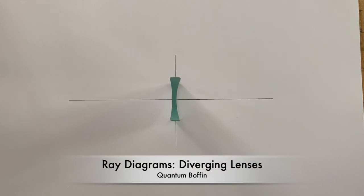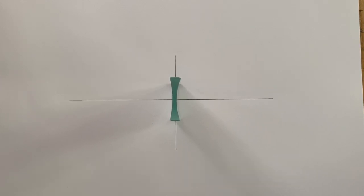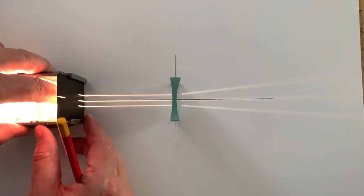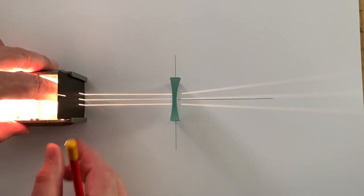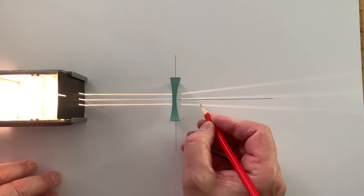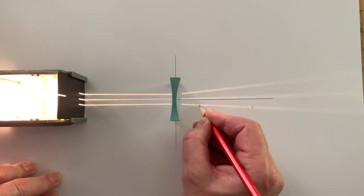A concave lens, also known as a diverging lens, is a specially shaped piece of glass that is designed so that rays of light entering the lens always spread out away from a common focus point.